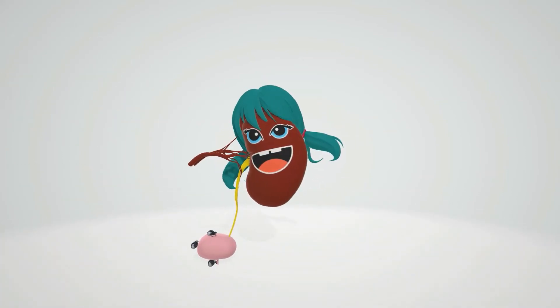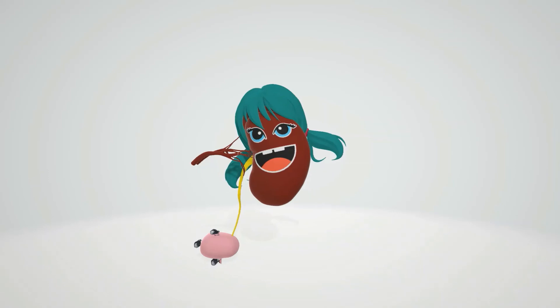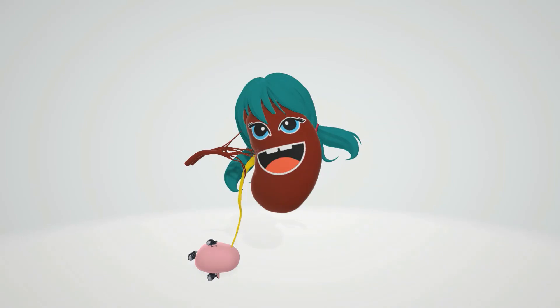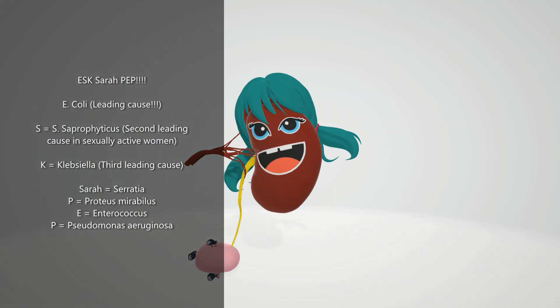Let's discuss which species of bacteria cause urinary tract infections. Her name is Sarah Pepp, and that helps us remember: E for Escherichia coli — I know it's supposed to start with an A but here we'll start with an E — S for Staphylococcus saprophyticus, K for Klebsiella, Sarah for Serratia, P for Proteus mirabilis, E for Enterococcus, and P for Pseudomonas aeruginosa.